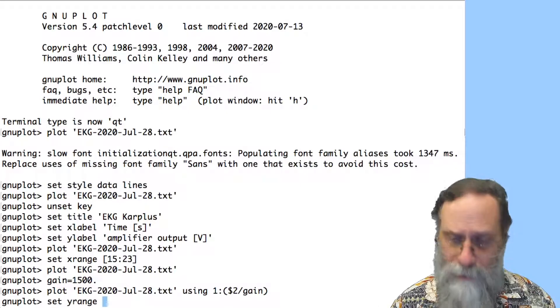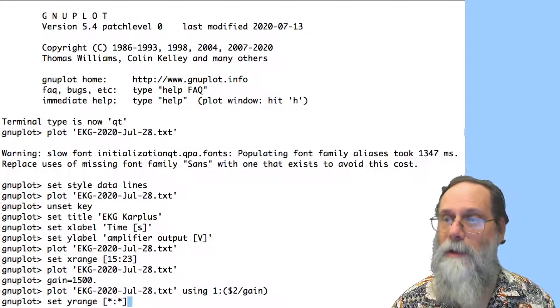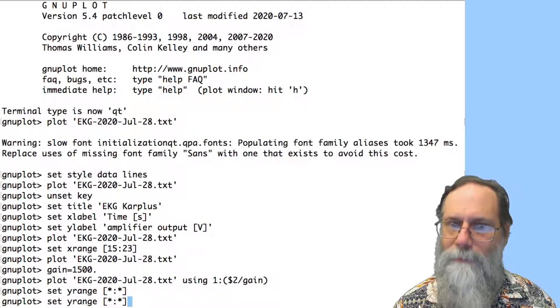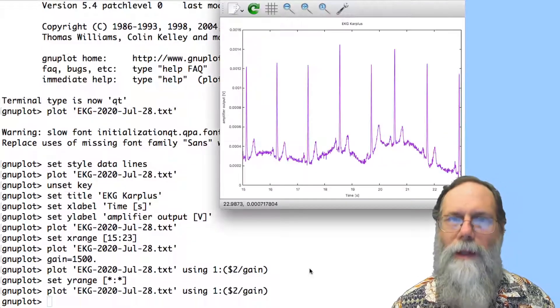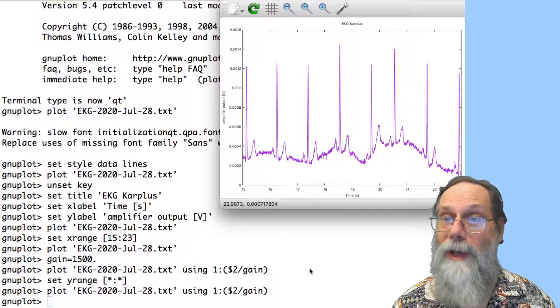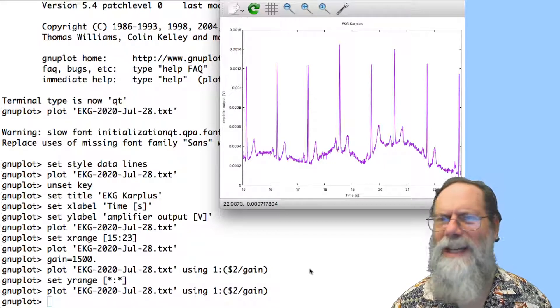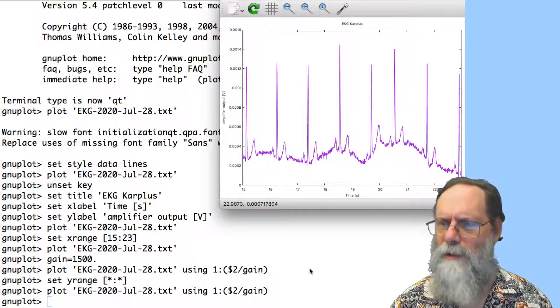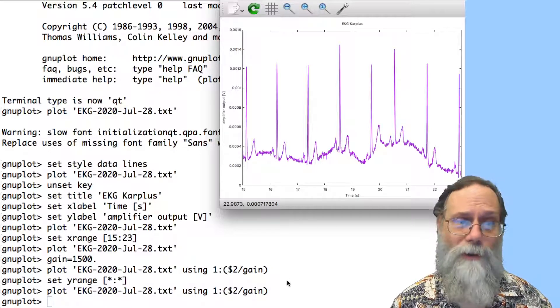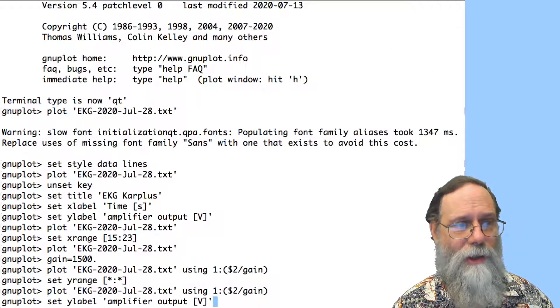I don't know what the y-range should be. I don't have the numbers in my head. So I can say star, colon, star in square brackets. And that means pick the lower range automatically. Pick the upper end of the range automatically. And if I do the plot, it has given me back a nice-looking picture. And the range is 0 to 0.0016. I hate counting zeros. Let's rescale this thing. I don't want the thing in volts anymore. It's not the amplifier output anymore, either. It's the electrode voltage.